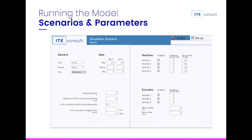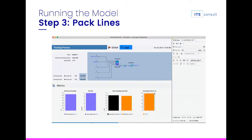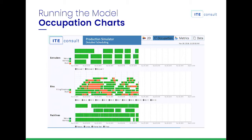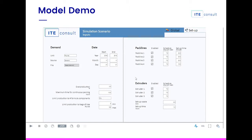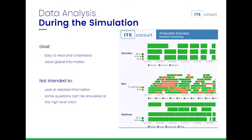Here is the main input scenario — we have inputs for extruders, packlines, and so on. These are the bins. This is the packlines view. And this is an occupation graph chart. These are the metrics we use in the model, and this is the optimizer interface. We're not going to run the model because we don't have time.